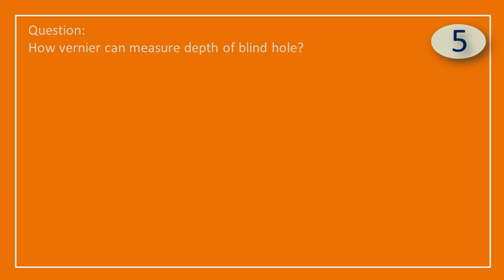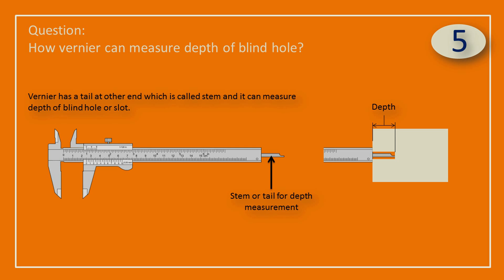Question: How can Vernier measure the depth of a blind hole? Answer: Vernier has a tail at the other end which is called a stem, and it can measure the depth of a blind hole or slot.